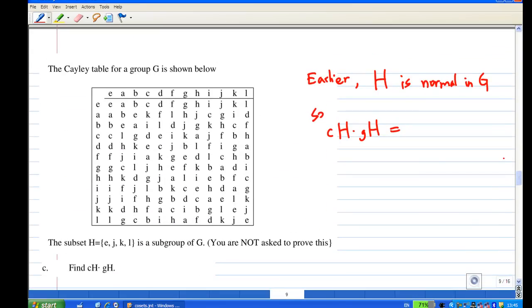In this case, we're going to find cH times gH. Earlier we have shown that H is a normal subgroup of G. Using the earlier result, cH times gH will be (cg)H, and c times g in this case equals k.